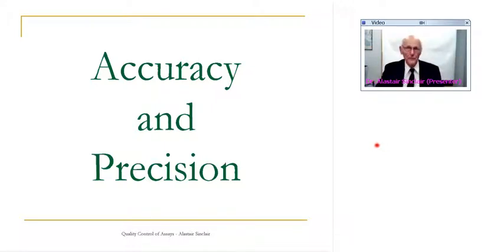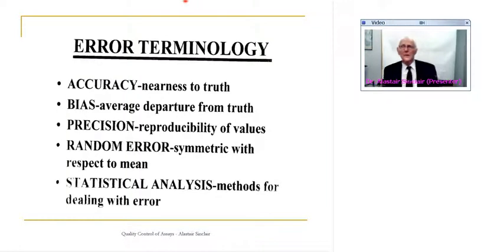I want to start by defining the terminology so we all know where we're coming from. Accuracy is nearness to the truth. Bias is the average departure from the truth, and I emphasize the word average because you cannot determine bias based on one or two samples.